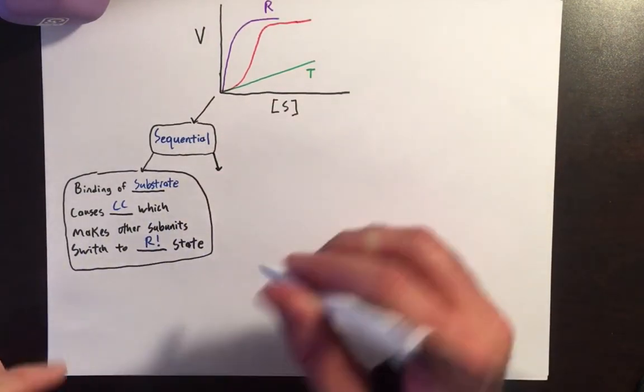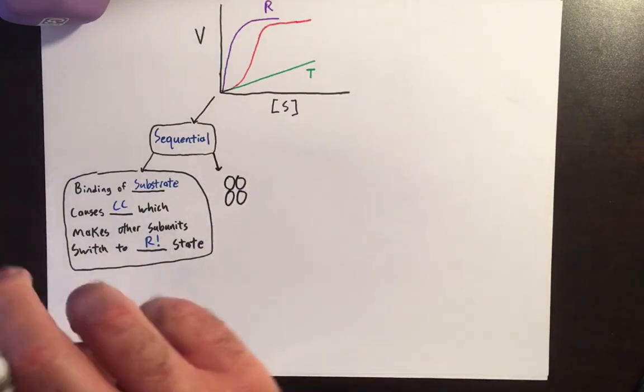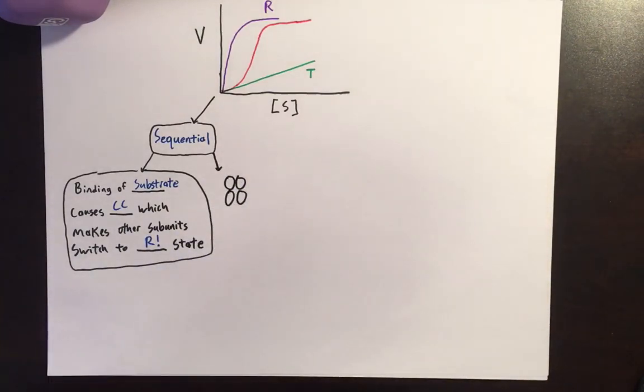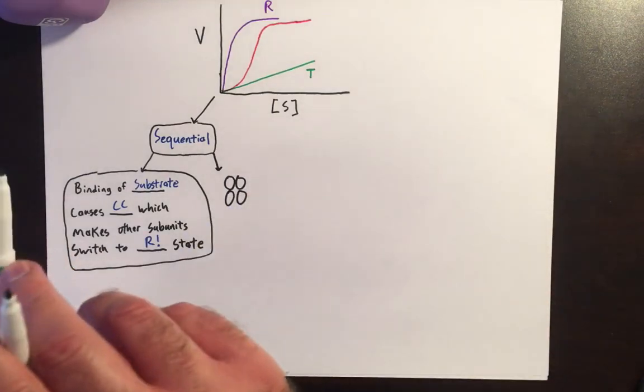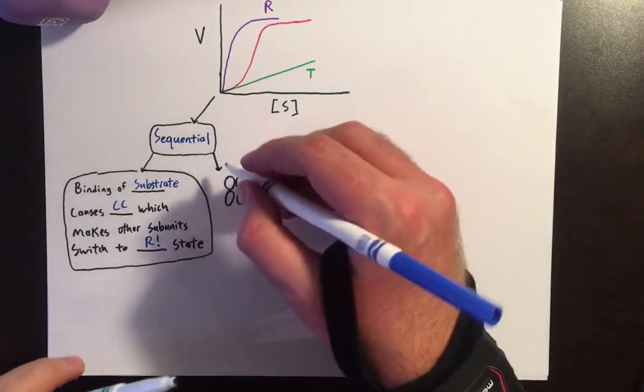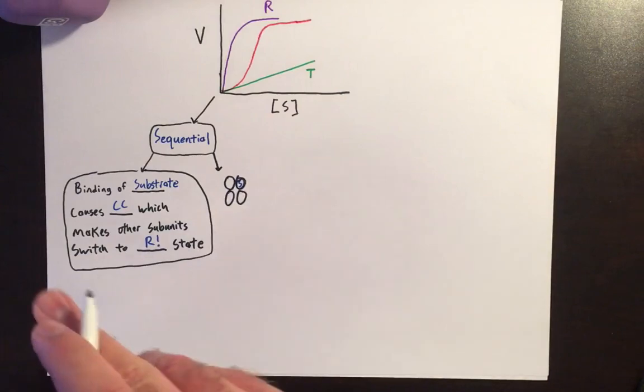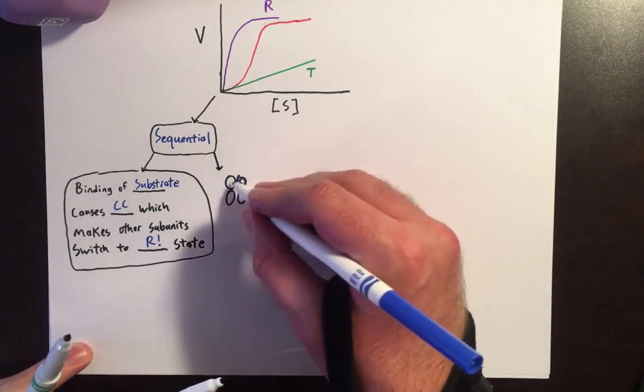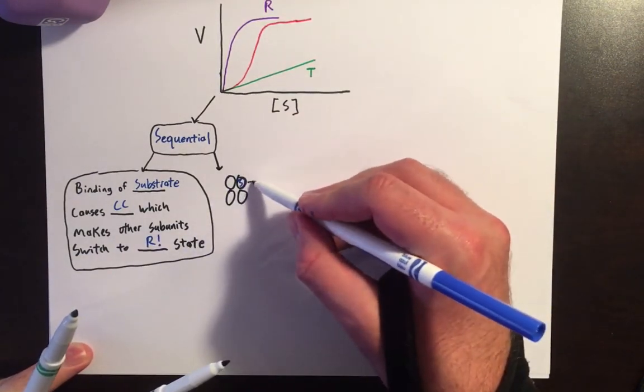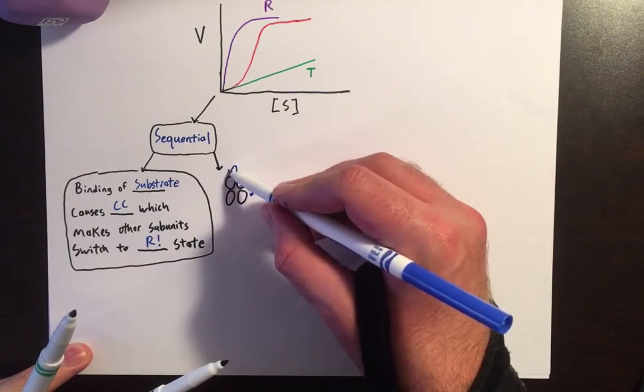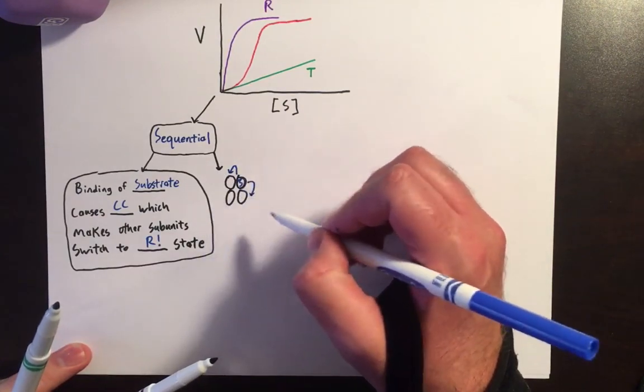Just to give you a brief illustration of what that looks like, let's say we have a quaternary-level enzyme complex here, and these are all initially in the T-state. But when the substrate binds, I'm just going to abbreviate that as S here, this substrate is going to undergo a conformational change in this subunit, which is going to cause the two adjacent units to also undergo a conformational change.